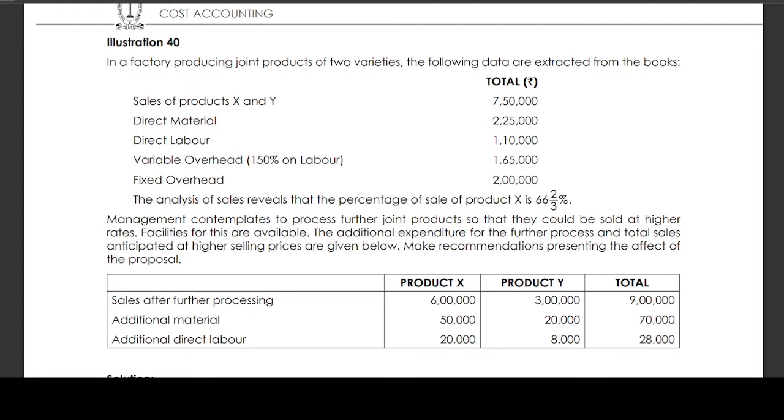Sales after further processing: product X — 6,00,000; product Y — 3,00,000; total — 9,00,000.